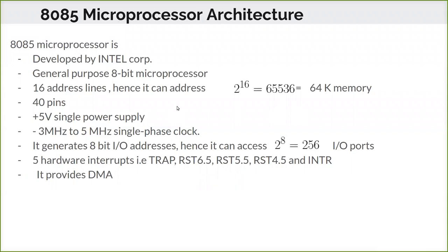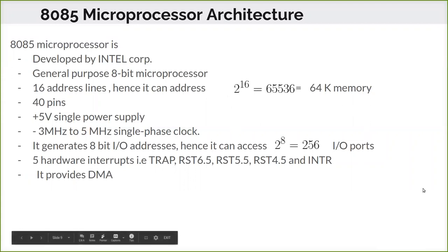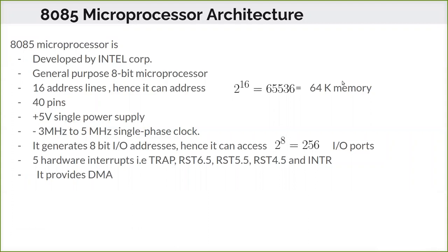The 8085 is an 8-bit microprocessor, which means you can store 8 bits of information at a time. It has 16 address lines, so it can address 2 to the power of 16 — that is 65,536 individual lines — where each line consists of 8 bits of information. That is what is meant by an 8-bit microprocessor with 16 address lines.